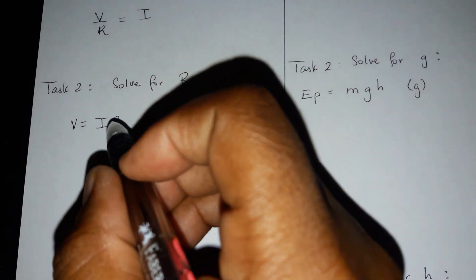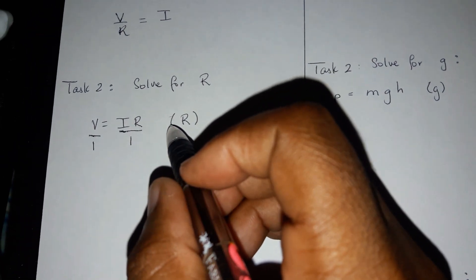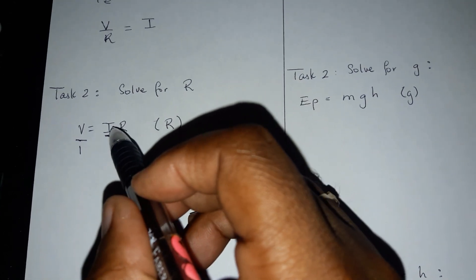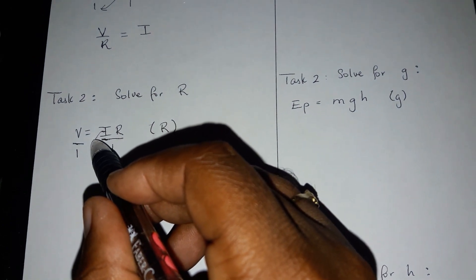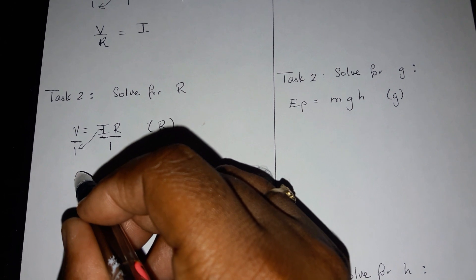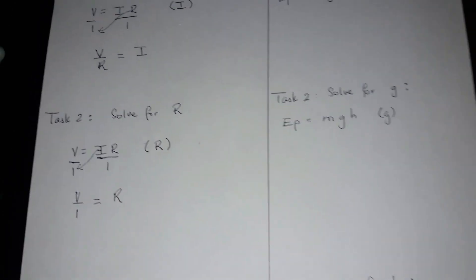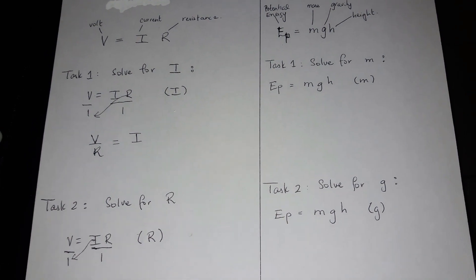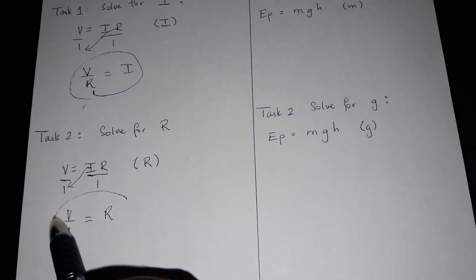Now let's try to solve for R. Again, we put everything over 1. We say we're solving for R, so R must stay there — we don't touch it. So we have to get rid of I, and since I is in the numerator, it must slide diagonally down underneath V. Therefore, we would have V over I equals to R. So: if V is equal to IR, then I equals V over R, and R equals V over I.